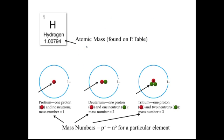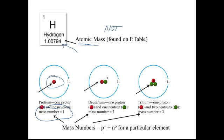When you look at a periodic table, the atomic mass is the decimal number shown there — it is not the mass number. The mass number requires you to look at a particular atom and see what's in its nucleus. This atom has one particle in the nucleus — mass number one. This has one proton and one neutron — mass number two. And this one has three particles — mass number three. Mass number is not the same as atomic mass. These are all hydrogens — they all have one proton.